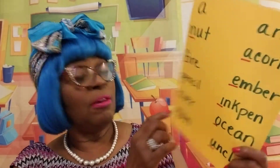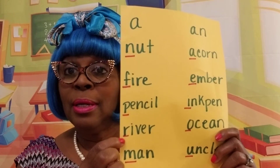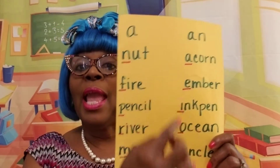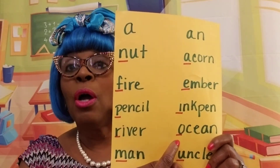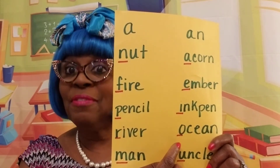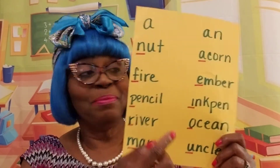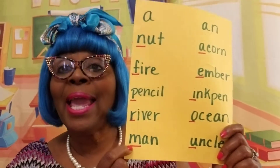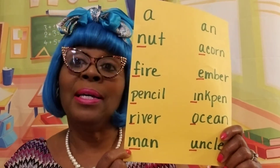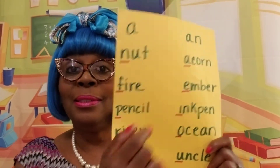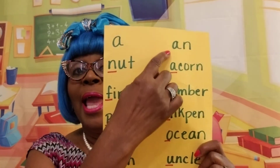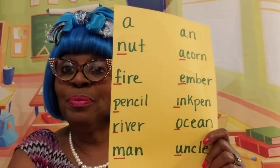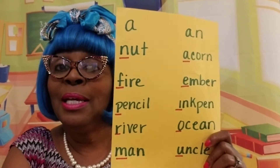A river — R is a consonant. An ocean — O is a vowel, right? A man — M is a consonant. An uncle — U is a vowel.